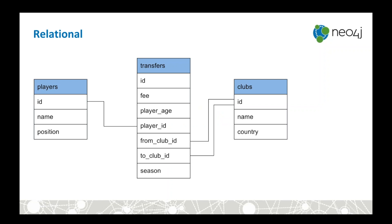Starting with the relational model — this is what seemed like the most obvious way of modeling it, though there are other ways. From the left-hand side we've got a players table with three fields: ID, name, and position. That's connected via a primary key/foreign key link into the transfers table on the player ID field. The transfers table stores information about a transfer, and then we have two foreign key/primary key relationships into the clubs table on the right-hand side — one from the from-club column and one from the to-club column. So we've got three tables: players, transfers, and clubs.